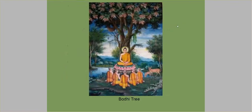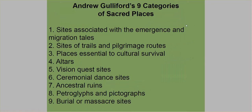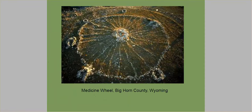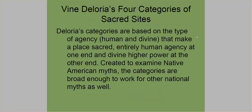Comparing Gulliford and Deloria: Gulliford is very specific about what these sites were used for and what they represent, while Deloria's framework is based on human and divine agency. It's kind of a spectrum — totally human at one end, totally divine at the other — and the two middle categories are a combination of human and divine interactions in the space that makes it sacred.